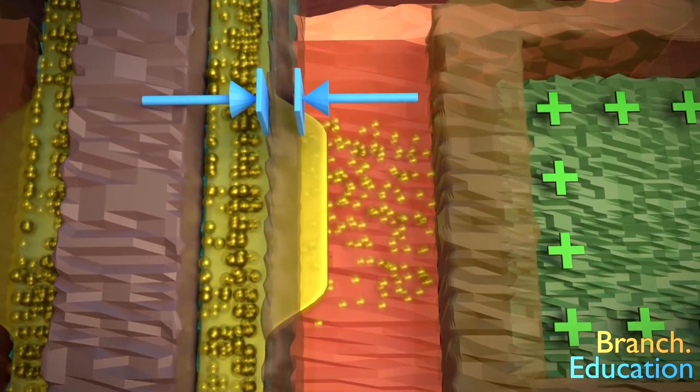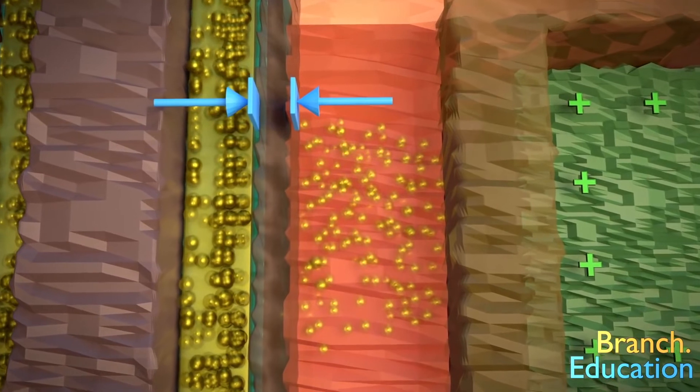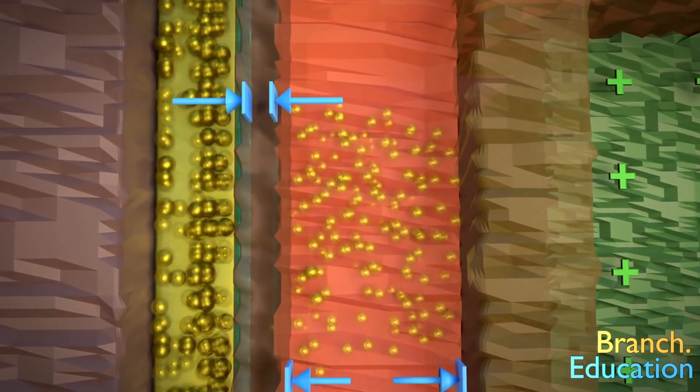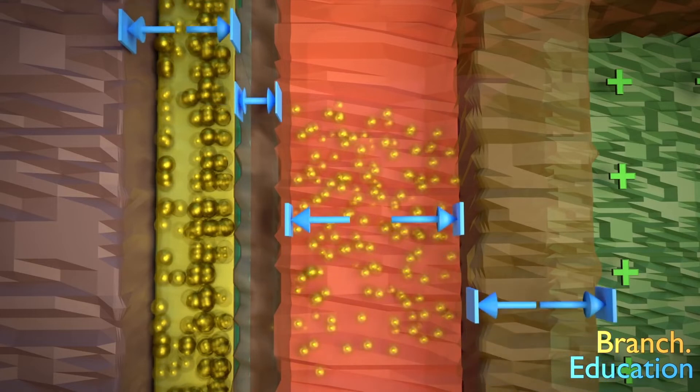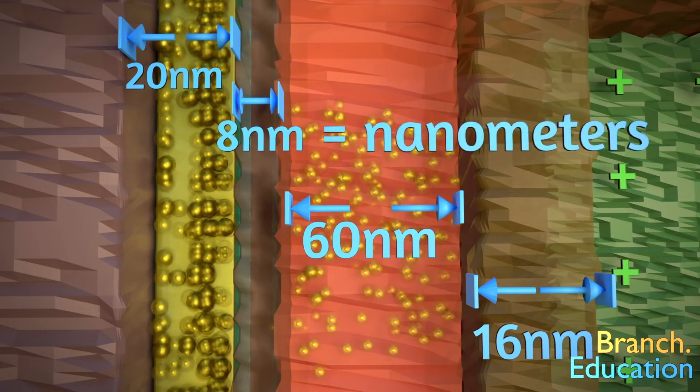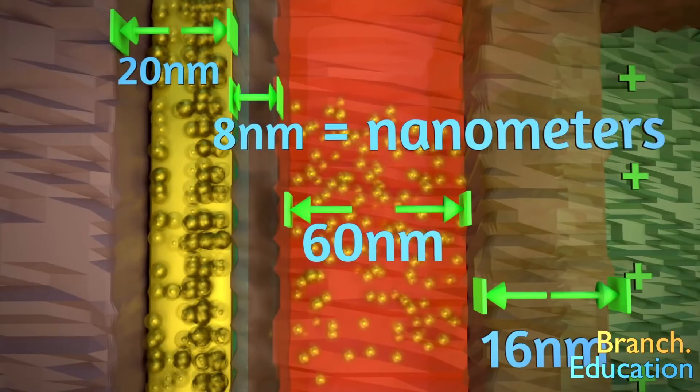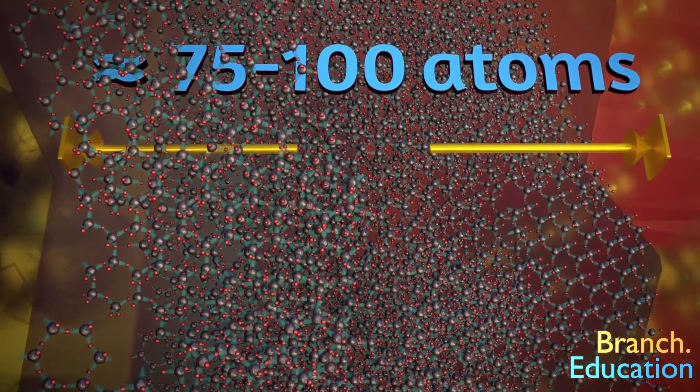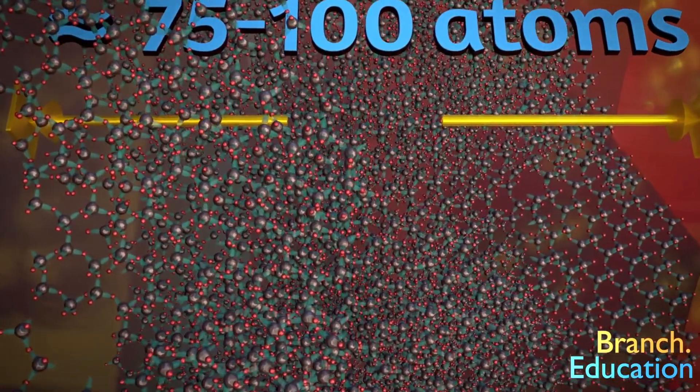In fact, perhaps the most impressive detail is how thin the dielectric barrier is. These are some of the smallest things humans have ever mass manufactured and, as you see, the dimensions shown here are in nanometers. If we were to zoom in on the dielectric, we find that it's only 75 to 100 atoms thick.